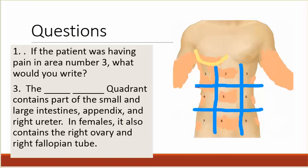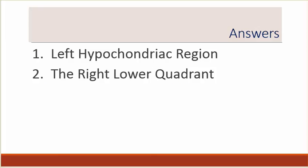Number one: if the patient was having pain in area number three, what would you write? Number two: the blank, blank quadrant contains part of the small and large intestines, appendix, and right ureter. In females, it also contains the right ovary and right fallopian tube. Number one: the left hypochondriac region. Number two: the right lower quadrant.